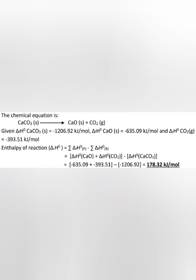Calculate the standard enthalpy of the reaction. The chemical equation is CaCO3 solid forms CaO solid and CO2 gas. Given: delta Hf CaCO3 equals minus 1206.92 kilojoules per mole, delta Hf CaO equals minus 635.09 kilojoules per mole, and delta Hf CO2 equals minus 393.51 kilojoules per mole.